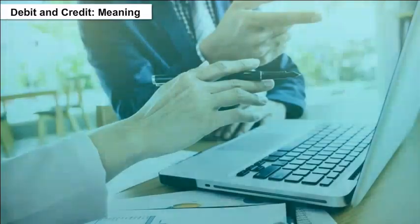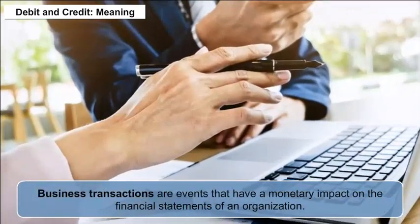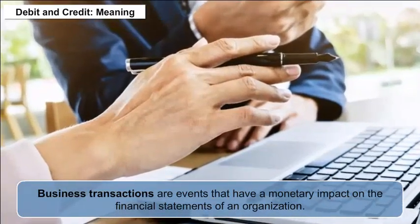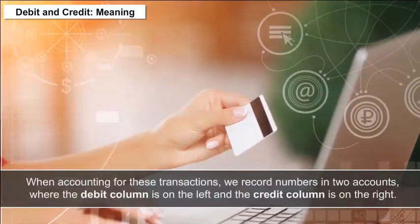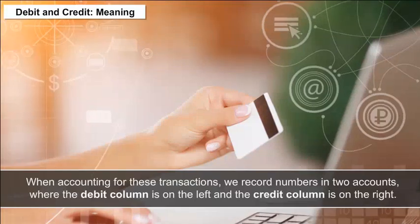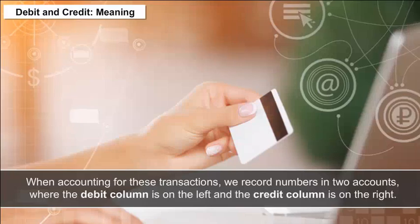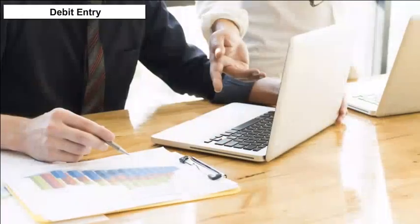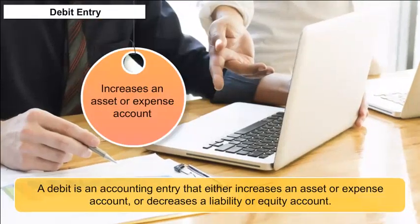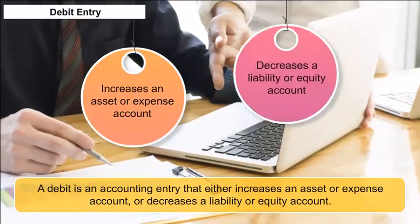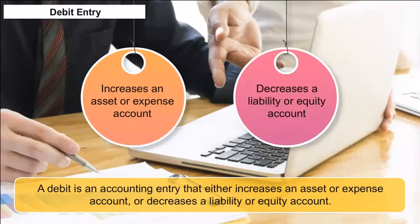Using Debit and Credit: Business transactions are events that have a monetary impact on the financial statements of an organization. When accounting for these transactions, we record numbers in two accounts where the debit column is on the left side and the credit column is on the right side. A debit entry is an accounting entry that either increases an asset or expense account, or decreases a liability or equity account. It is positioned to the left in an accounting entry.